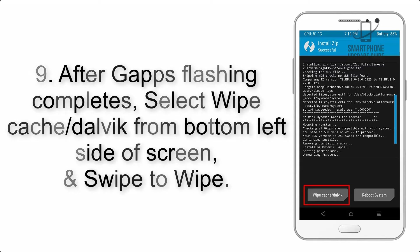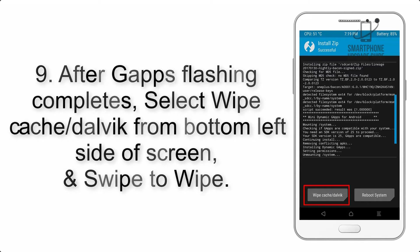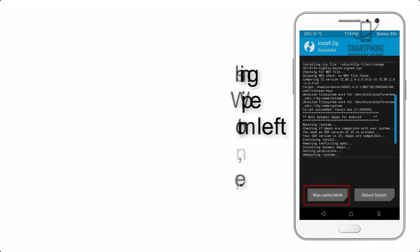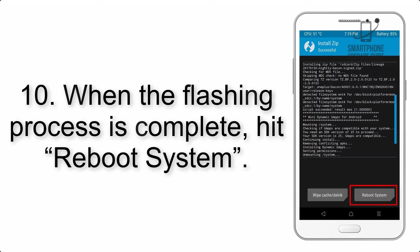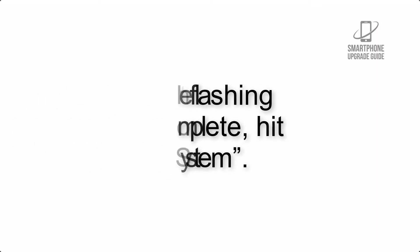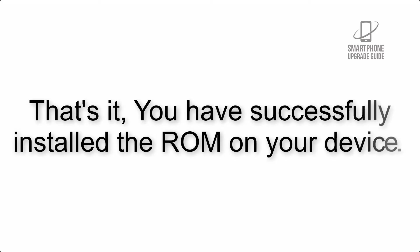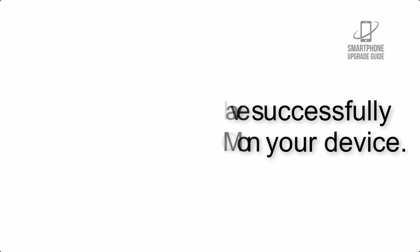Step 8: Flash the GApps zip package in the same manner. Step 9: After GApps flashing completes, select Wipe Cache and Dalvik from the bottom left side of the screen and swipe to wipe. Step 10: When the flashing process is complete, hit Reboot System. That's it — you have successfully installed the ROM on your device.